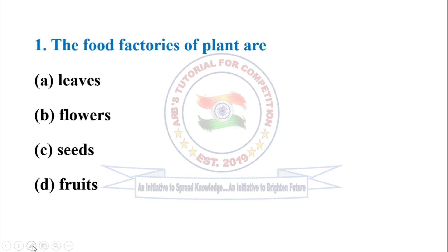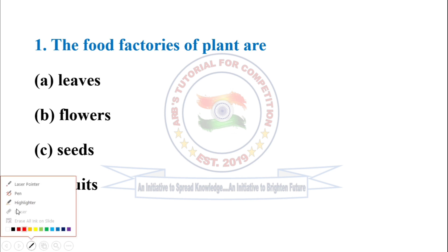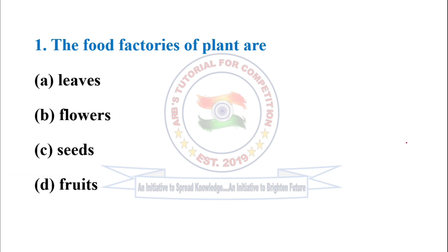First question: the food factories of plants are? The correct option is A — leaves. Plants produce food in their green leaves.